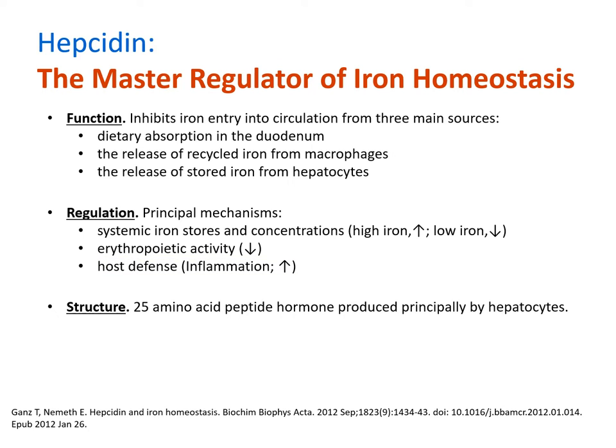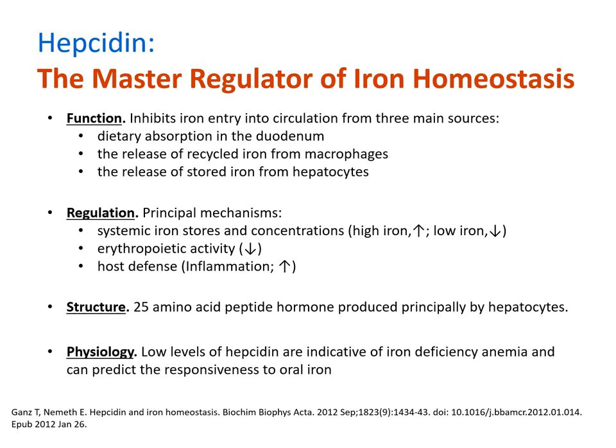Structurally, hepcidin is a small cationic peptide of the defensin family, compacted by four disulfide bridges. It is principally expressed in the liver, but localized production does occur in other tissues like the heart and brain. Physiologically, hepcidin can predict iron deficiency anemia, as well as non-anemic iron deficiency.